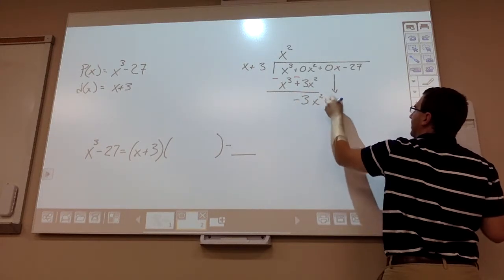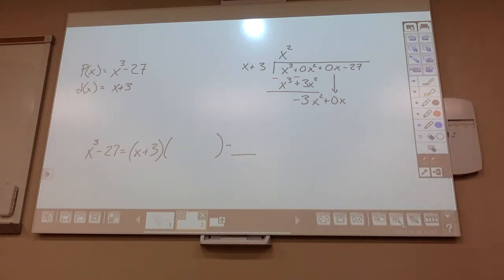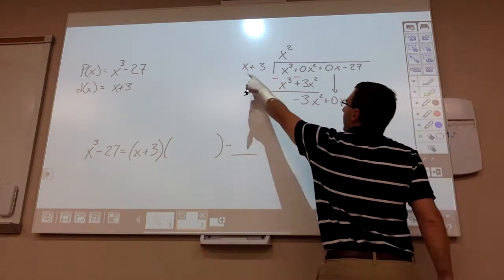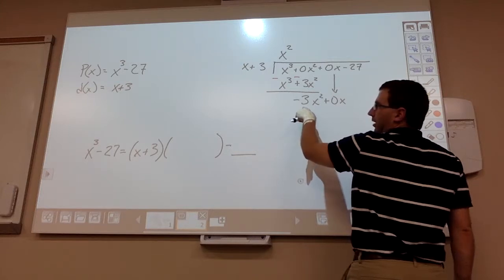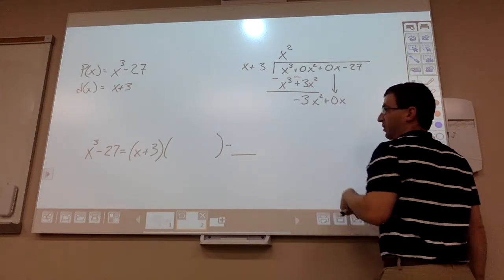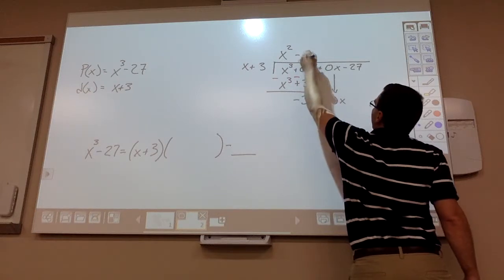And then bring down your next term, just like we did on the last problem. Now we repeat the process. What times x gets me -3x²? Well, that should be -3x. So that would be -3x on the top.